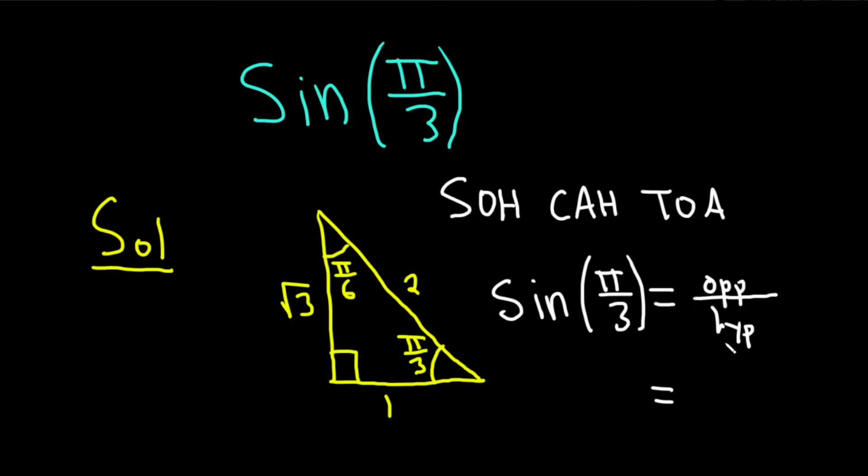So looking at pi over 3, what is the side that is opposite the angle pi over 3? The square root of 3. And the hypotenuse is 2.